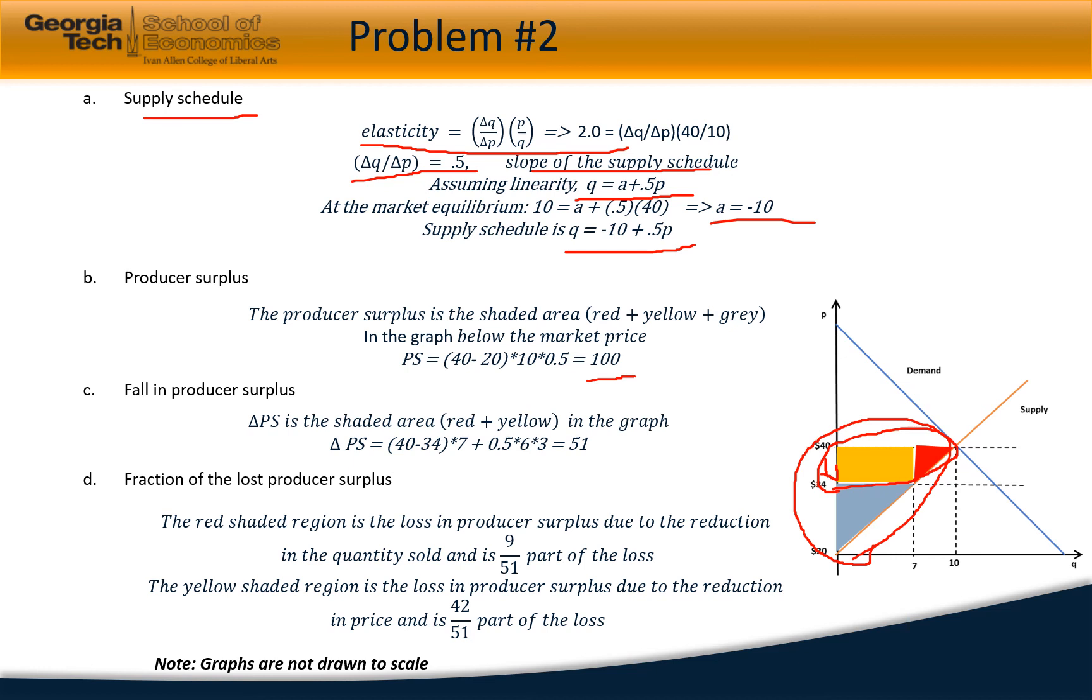The total producer surplus drop turns out to be 51. 9 by 51 part of it is due to the reduction in quantity sold, and 42 by 51 part of it is due to the reduction in price.